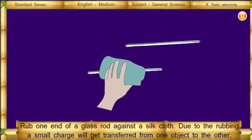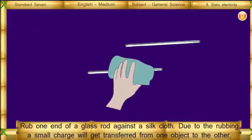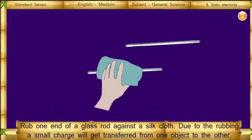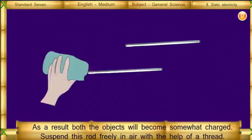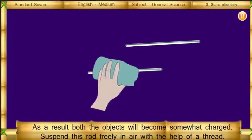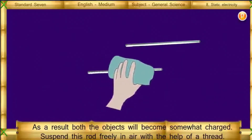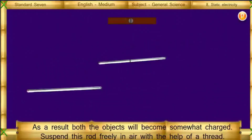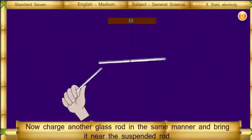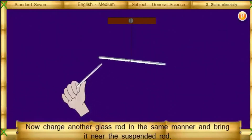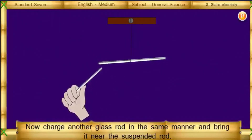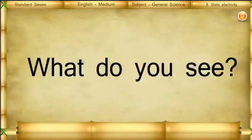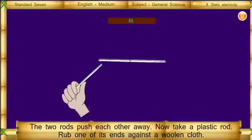Rub one end of a glass rod against a silk cloth. Due to the rubbing, a small charge will get transferred from one object to the other. As a result, both objects will become somewhat charged. Suspend this rod freely in the air with the help of a thread. Now charge another glass rod in the same manner and bring it near the suspended rod. What do you see? The two rods push each other away.